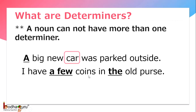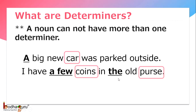I have a few coins in the old purse. If we look at 'coins', it is preceded by the determiner 'a few'. Remember, 'a few' is a group of words which is a determiner and it follows the noun 'coins'. The old purse — here 'the' is the determiner, as there can only be one determiner for each noun, and 'old' is the adjective.